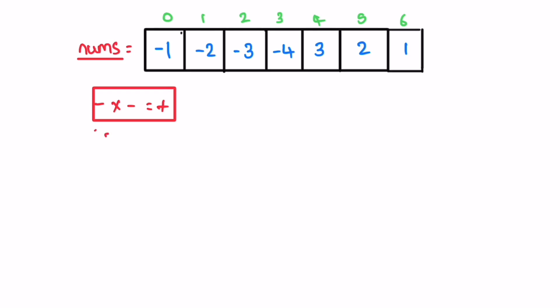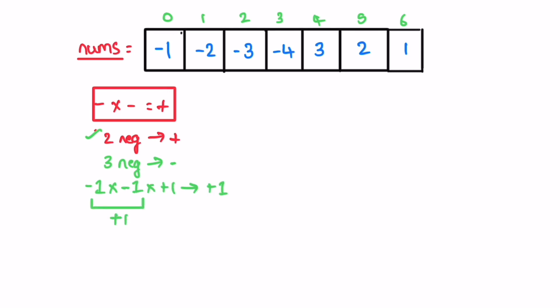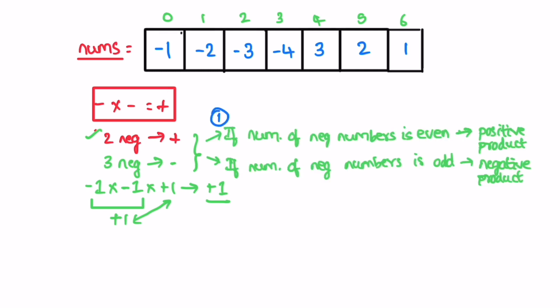If you multiply two negative numbers you get a positive value; if you multiply three negative numbers you get a negative number. So multiplying two -1s gives +1, and multiplying +1 by +1 gives +1. The two key observations are: if the number of negative numbers is even, the output is positive; if the number of negative numbers is odd, the output is negative.